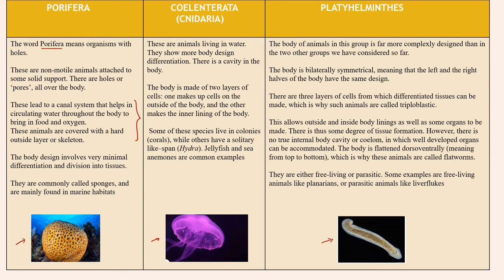The body design involves very minimal differentiation and division into tissues — very primitive organisms with very less tissue differentiation. They are commonly called sponges and mainly found in marine habitat.